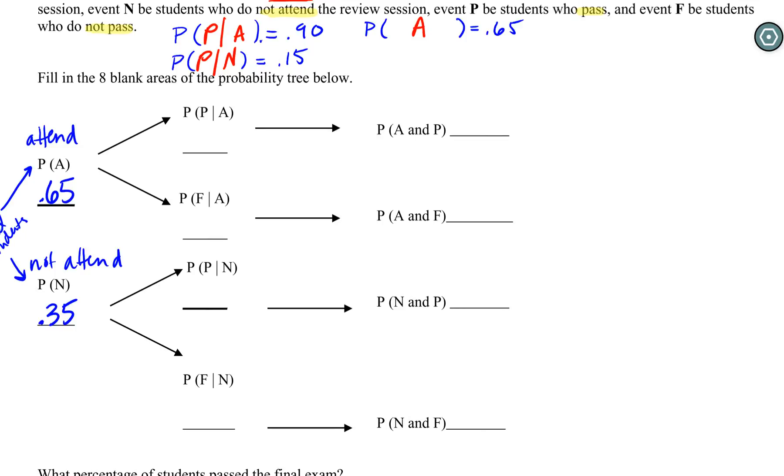And then we do this sort of choose your own adventure piece when we go, alright, so now of the students that attended there are two possibilities, two paths they could follow - they could either end up passing the final or they could end up failing the final. And we know these probabilities as well. It says 90% of those who attend are going to pass, which means 10% are going to fail. And for the ones who didn't attend, two options still - pass and fail - and we know it's a 15% chance of passing which means 85% of them must fail.